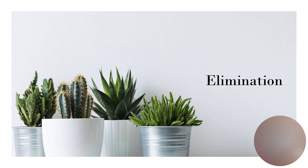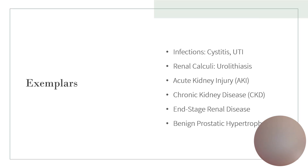Elimination. Interrelated concepts and exemplars here include infections, specifically cystitis and UTI, renal calculi also known as urolithiasis, acute kidney injury also known as AKI, chronic kidney disease known as CKD, end-stage renal disease, and benign prostatic hypertrophy. The interrelated concepts include digestion, fluid and electrolyte balances, tissue integrity, comfort, stress, and coping.